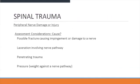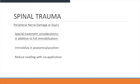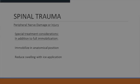Assessment considerations for peripheral nerve injury include: possible fracture causing impingement or damage to the nerve, laceration involving nerve pathways, penetrating trauma, or pressure from weight against the nerve pathways. Special treatment considerations include full immobilization in the anatomic position and reduction of swelling with ice application.